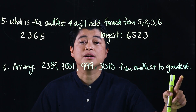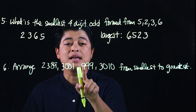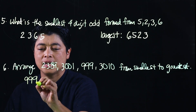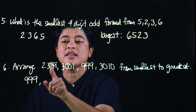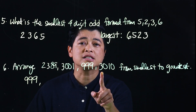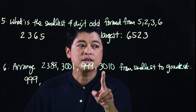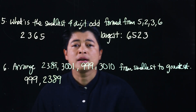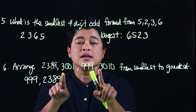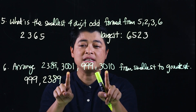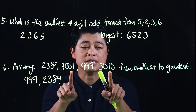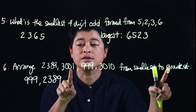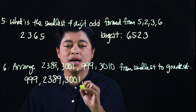Now when we arrange numbers from smallest to greatest, this number is the smallest because it only has three digits — that's 999. Then we look at the thousands place: two is smaller than three, so 2389 comes next. For the numbers that start with three, we move to the next place value — they're the same. Moving to the next place value, zero compared with one: the smallest is zero.